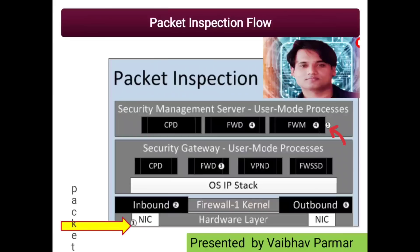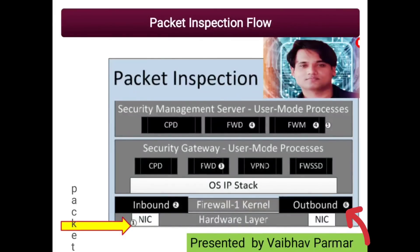Finally, logs are forwarded to the fwm process via the cpd process. The fwm process sends the logs to SmartConsole applications such as SmartLog. Also note that depending on the routing decision made by the operating system — except for specific scenarios such as VPN routing — the packet is routed to a selected NIC, but the packet must go through the firewall kernel again, this time through the outbound chain to the appropriate NIC and to the network.